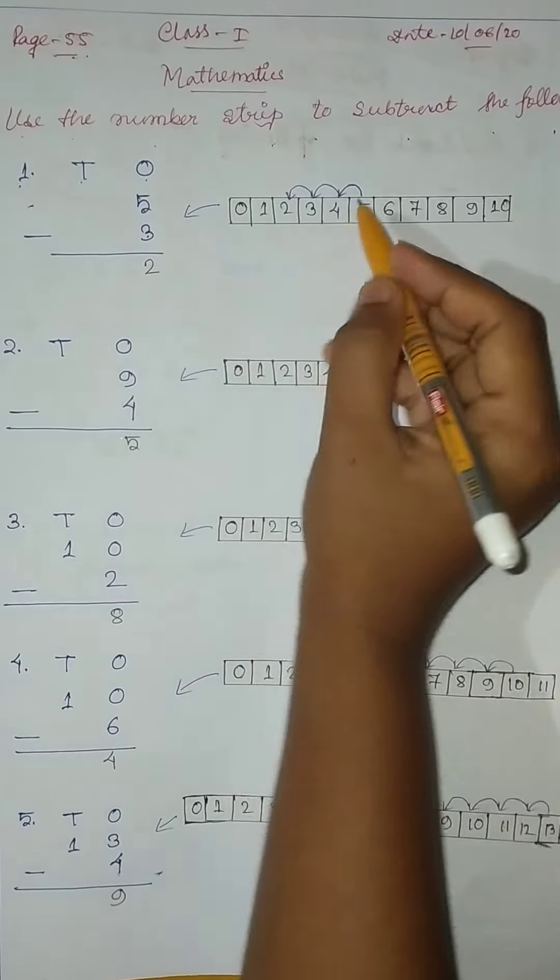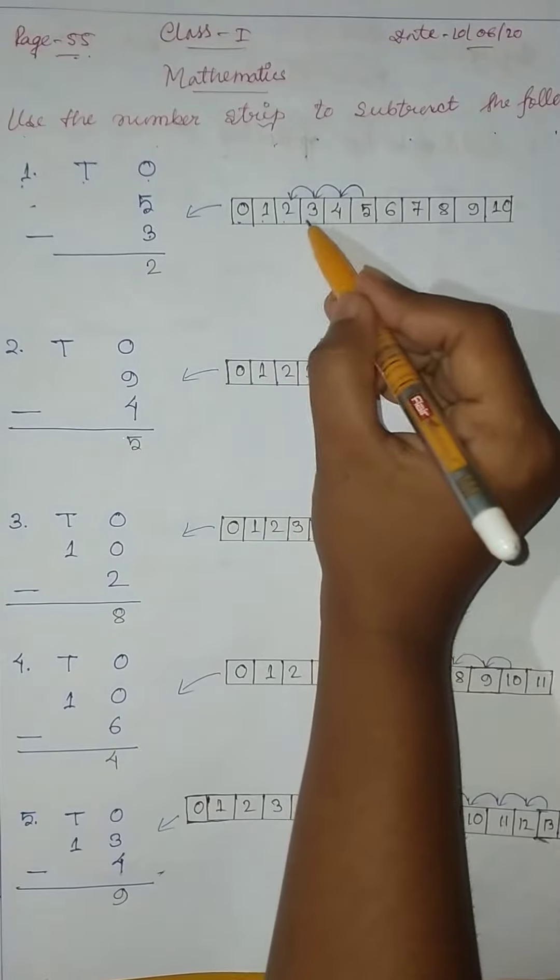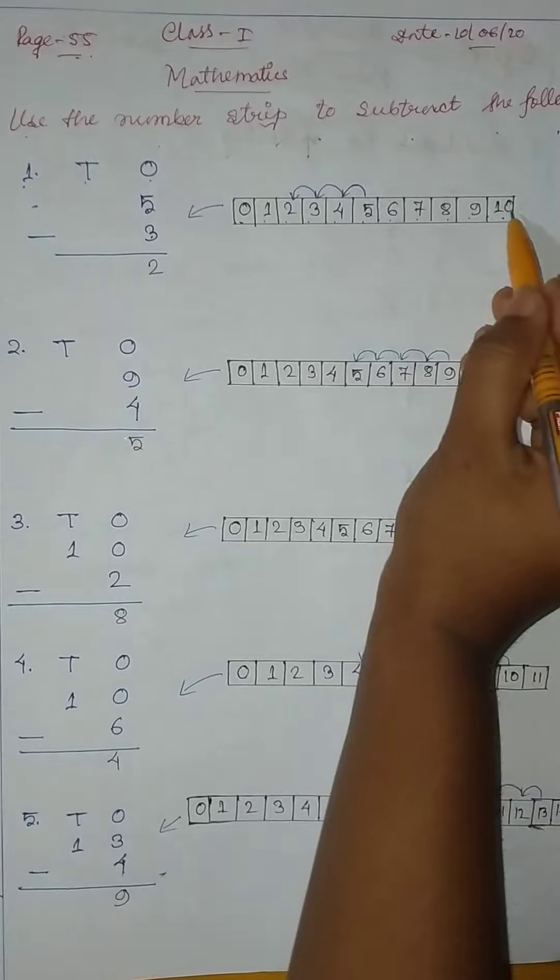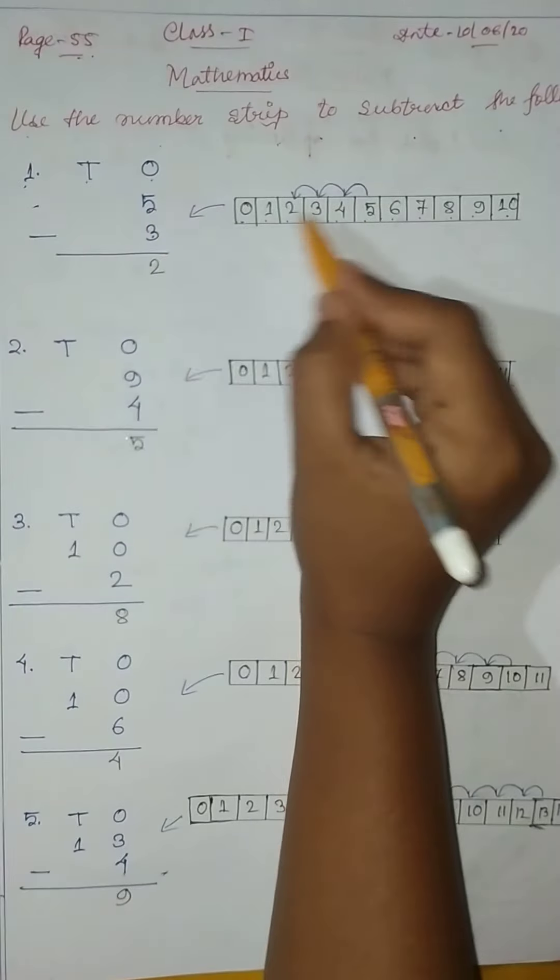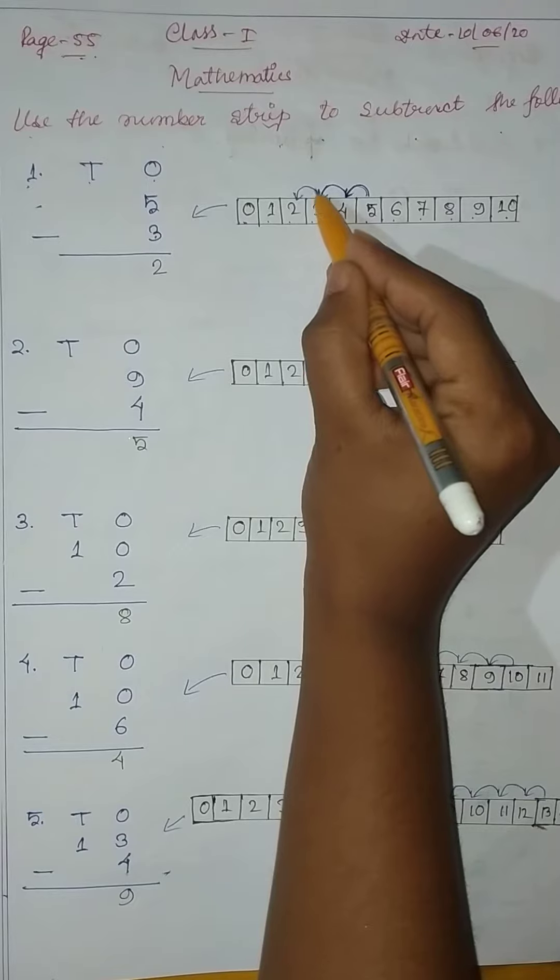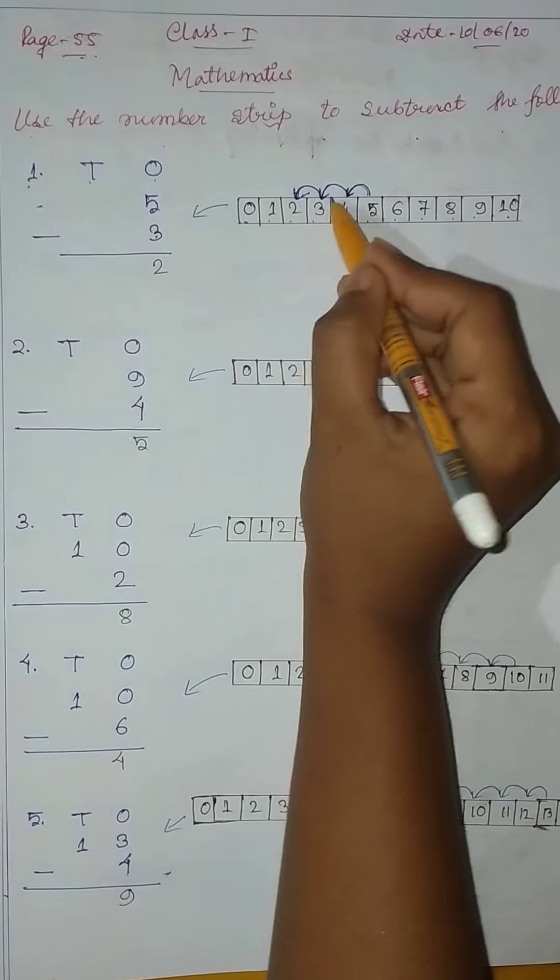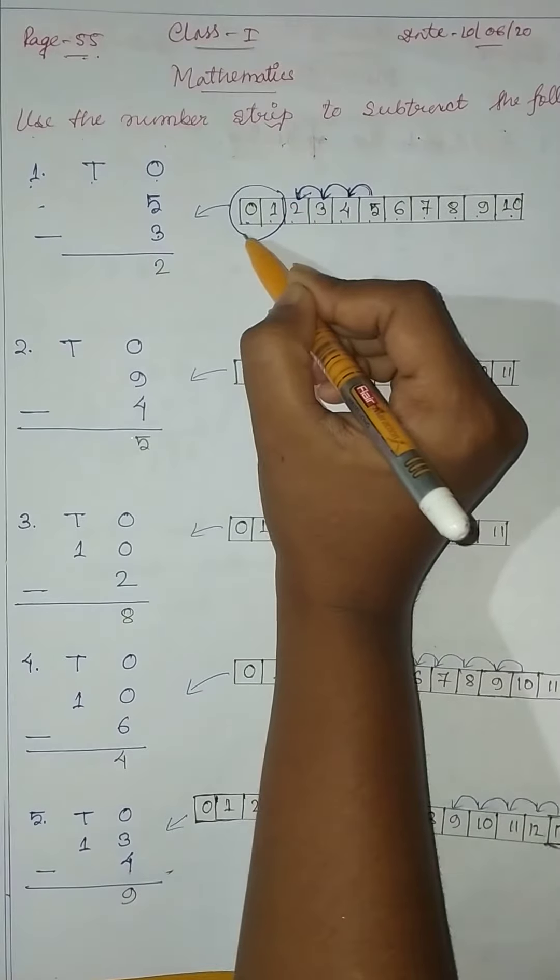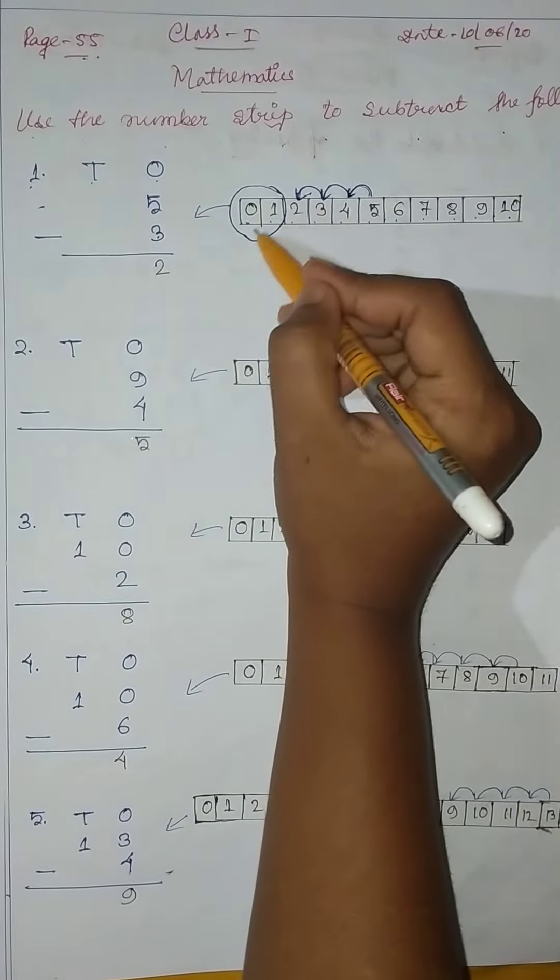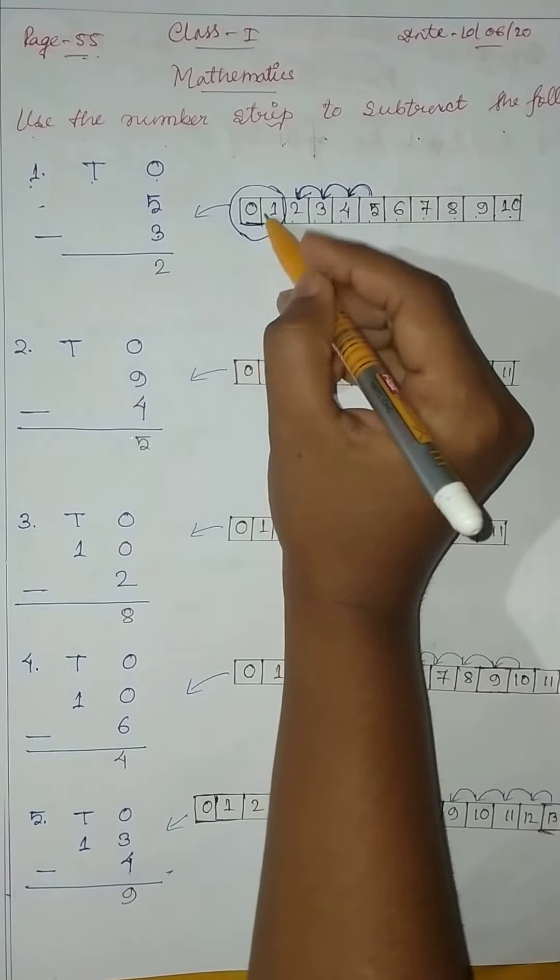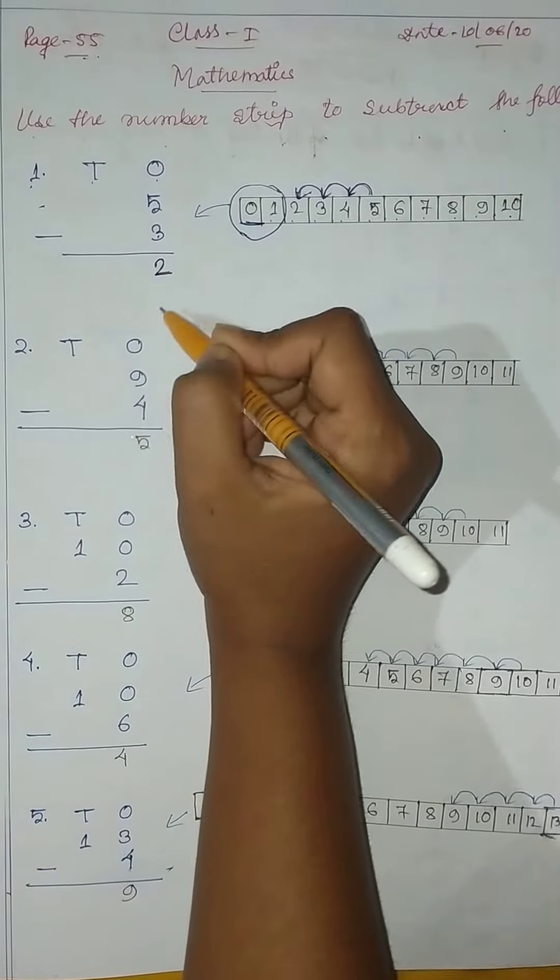So here, 0, 1, 2, 3, 4, 5, 6, 7, 8, 9, 10. 5 minus 3, 5 minus 3. 1, 2, 3. So here, left only 2 columns. So here, 2.